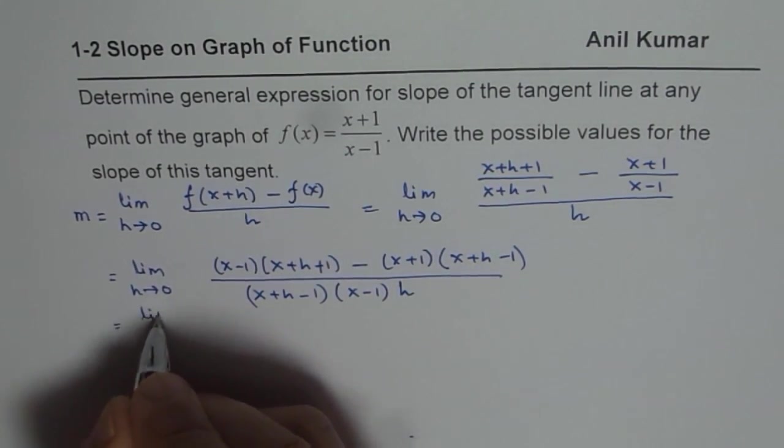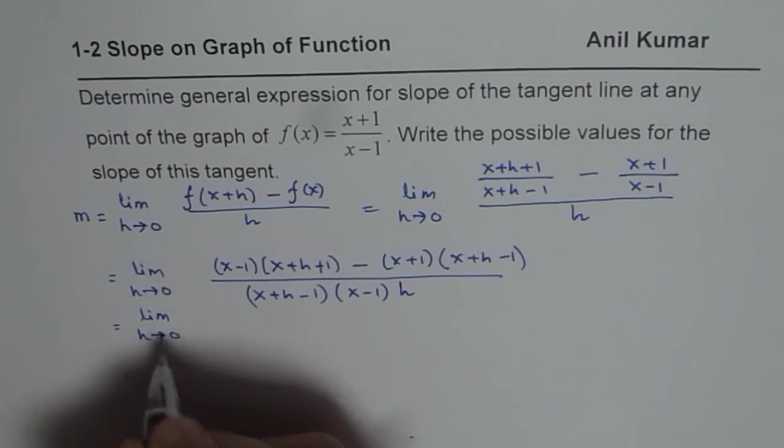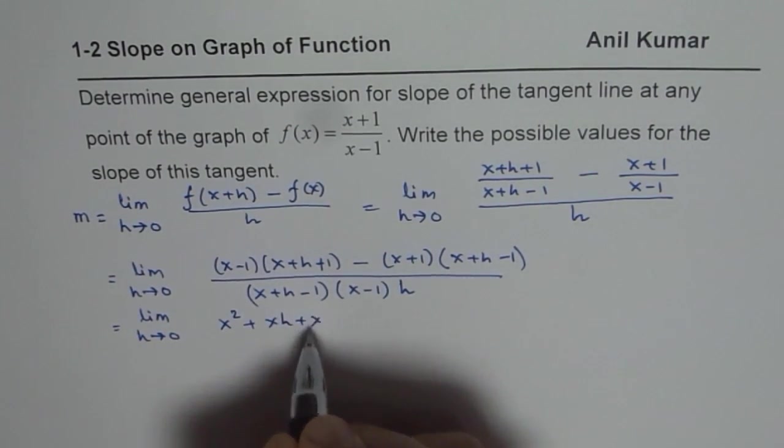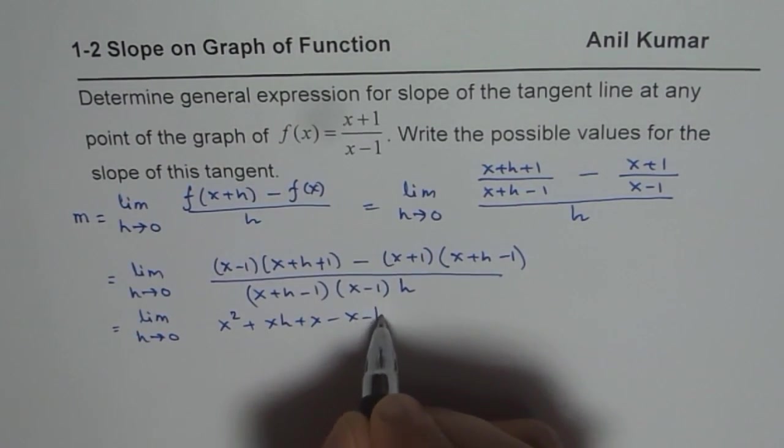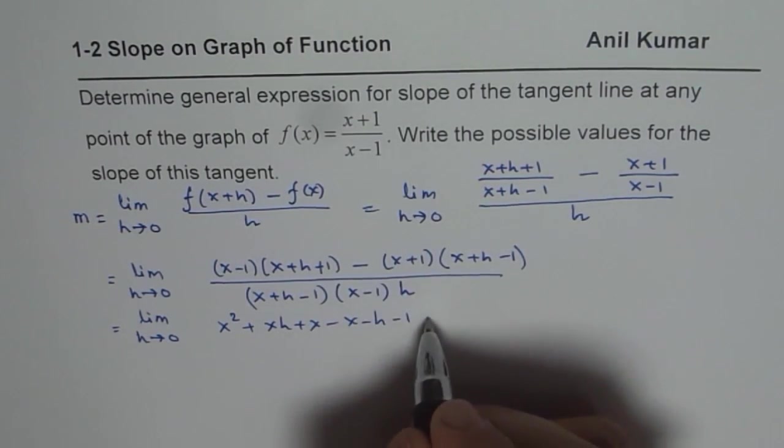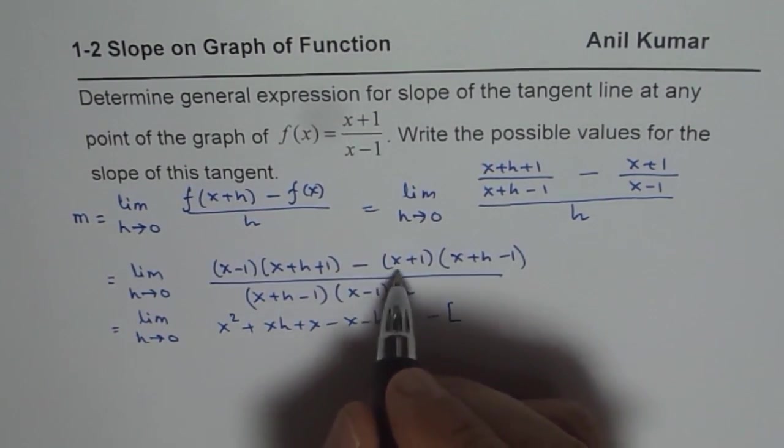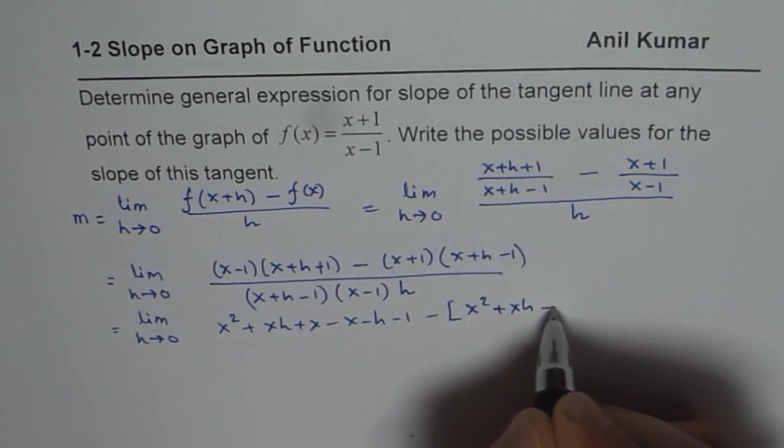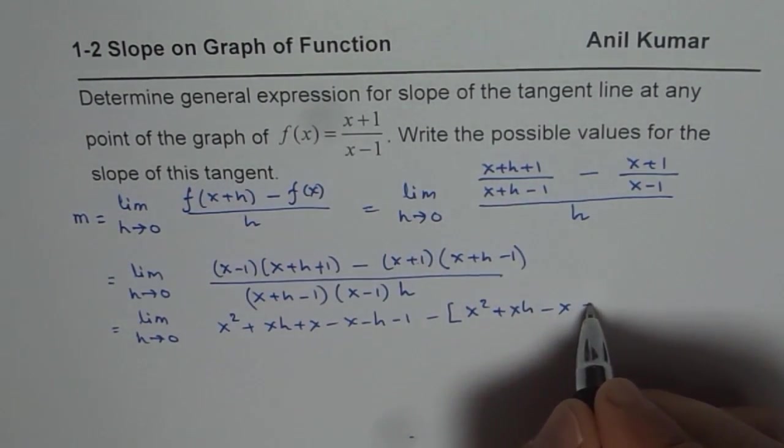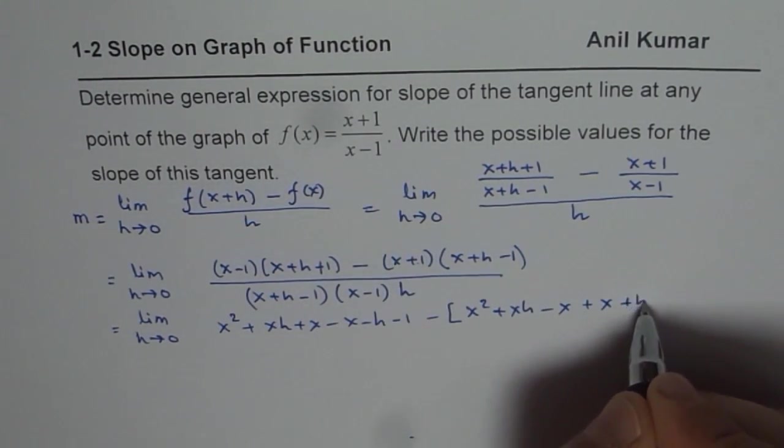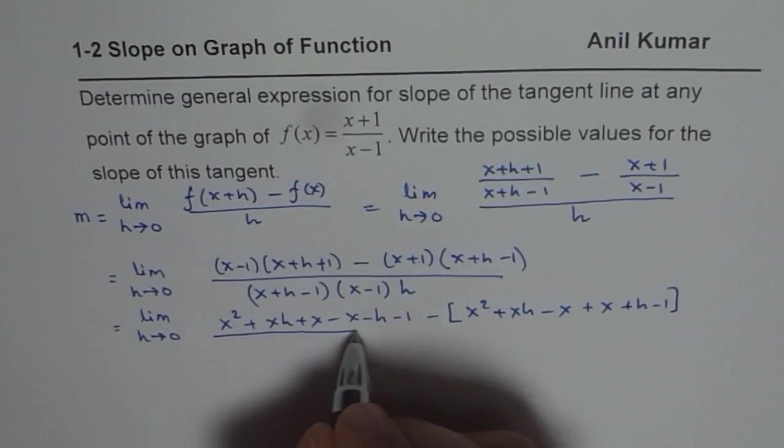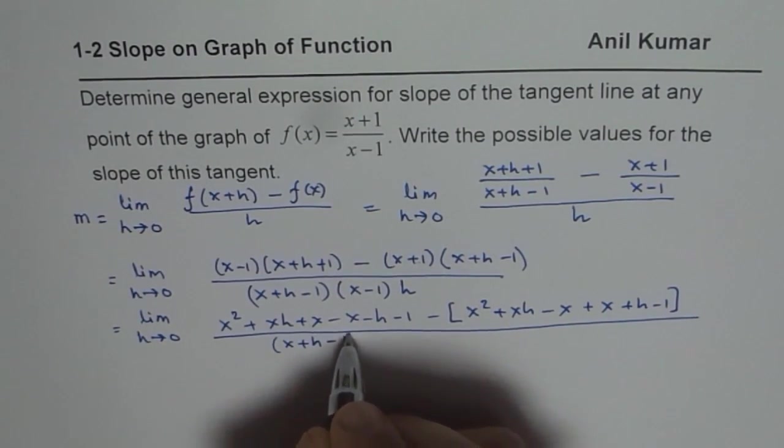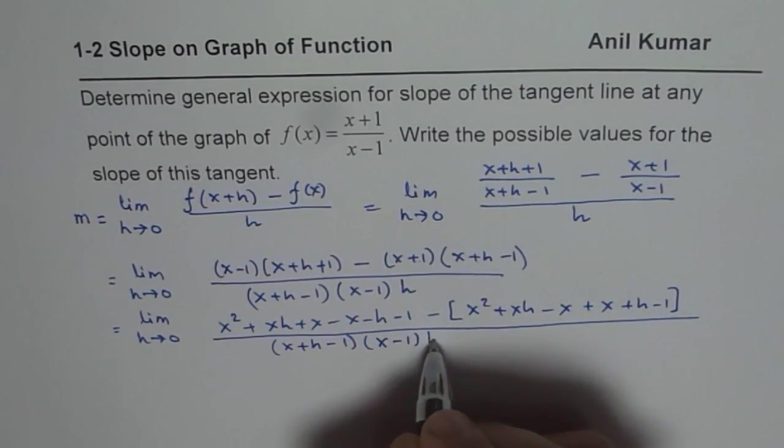Now, we need to expand the numerator and simplify. If you expand, you get x² + xh + x - x - h - 1. And here, we'll change the sign or write a bracket and then expand. Minus (x² + xh - x + x + h - 1). When you multiply by 1, you get all those terms.